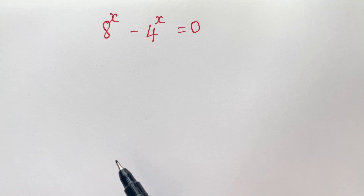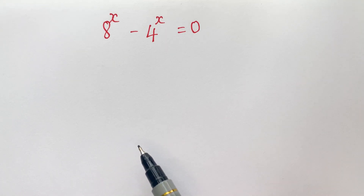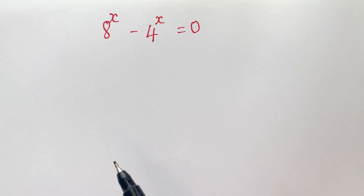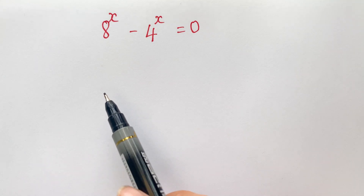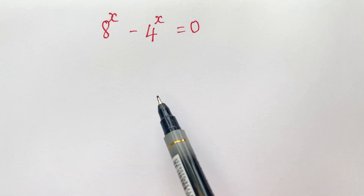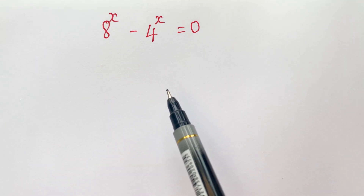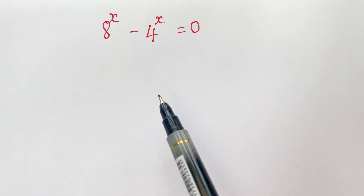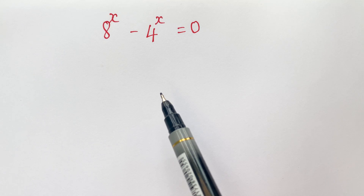Hello, today we are going to find the value of x in the exponential equation by 3 best ways. Everyone look at: 8 power x minus 4 power x is equal to 0.